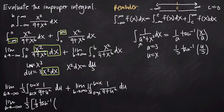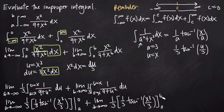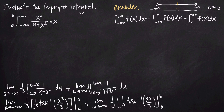We can back-substitute u equals x cubed, giving arctan of x cubed over 3. So we have the limit as a goes to negative infinity of 1 ninth times arctan of x cubed over 3, evaluated from a to 0, plus the limit as b goes to positive infinity of 1 ninth times arctan of x cubed over 3, evaluated from 0 to b.